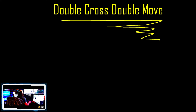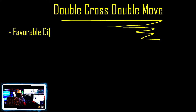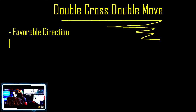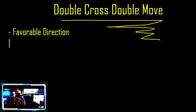Some of the first things we want to be looking for inside the double cross double move is the favorable direction. Tonight I'm going to go directly into the stuff on the double cross double move, but you need to go back and watch lessons one through six, particularly to add the core into this. Do not take this blindly — this is just the detail specifically on that strategy.